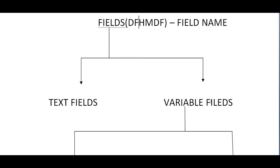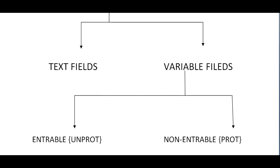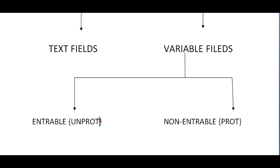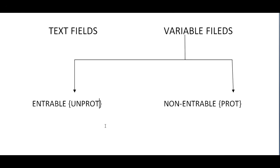In fields, we have text fields and variable fields. A text field is static — the data won't change; for example, 'Enter your name' is hard-coded text. Variable fields are enterable fields and non-enterable fields — some are protected and some are unprotected. Unprotected fields are where you enter data into the screen.